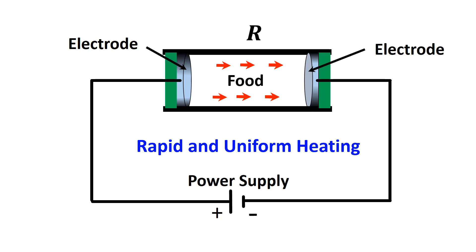In this diagram, food is filled inside an Ohmic heating tube and voltage V is applied. This causes the flow of current.